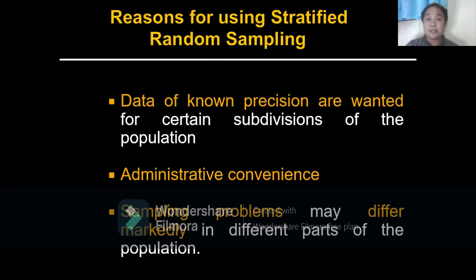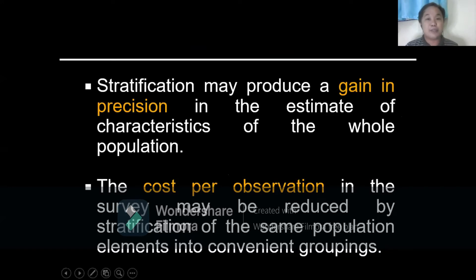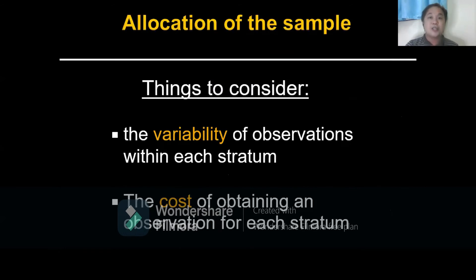Reasons for using stratified random sampling include: data of known precision are wanted for certain subdivisions of the population; there is administrative convenience; sampling problems may differ markedly in different parts of the population; stratification may produce a gain in precision in estimates of characteristics of the whole population; and the cost of observation in the survey may be reduced by stratifying population elements into convenient groupings.